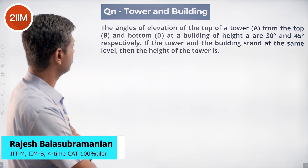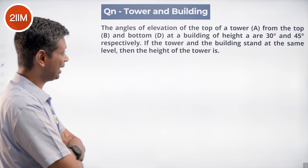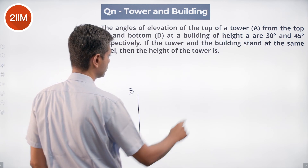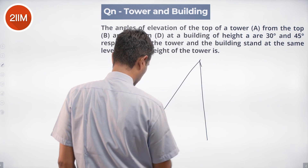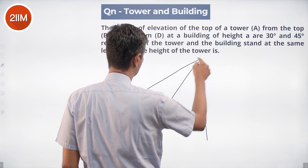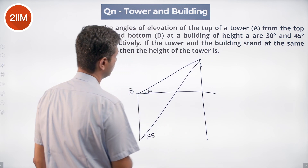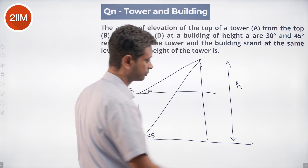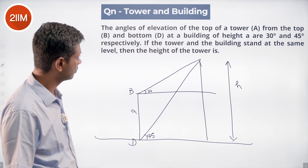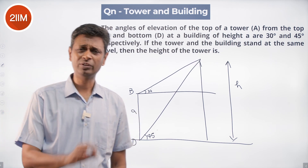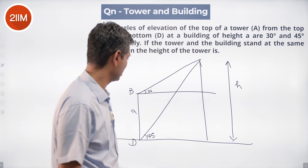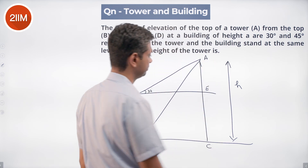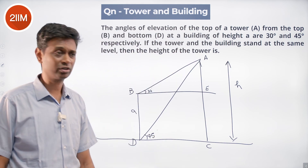The angles of elevation of the top of a tower from the top and bottom of a building of height a are 30 and 45 degrees. The building has top B and bottom D; the tower is beside it. The angle from the bottom is 45 degrees. Label the top of the tower A and the bottom C, with point E at the same level as B. We want to find the height of the tower.